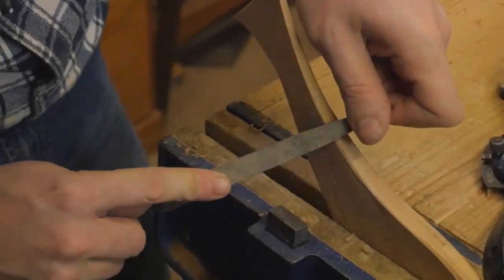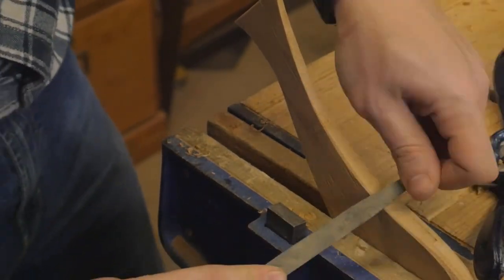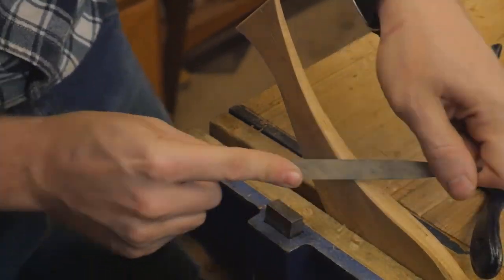Once I had that taper done, then I rounded the edges with a file to give it a nice soft appearance. So when it sits on the oven, it's not something that has a harsh corner.